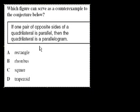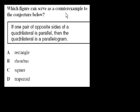Problem 9. Which figure can serve as a counterexample to the conjecture below? If one pair of opposite sides of a quadrilateral is parallel, then the quadrilateral is a parallelogram. So once again, a lot of terminology. Quadrilateral means four sides, a four-sided figure. And a parallelogram means that all of the opposite sides are parallel. For example, this is a parallelogram.